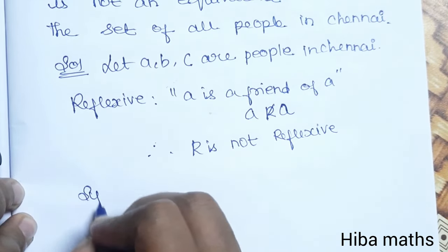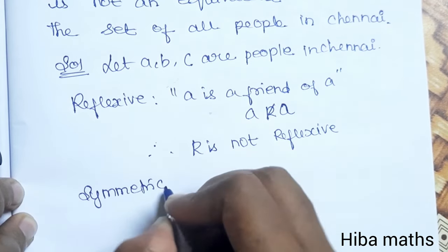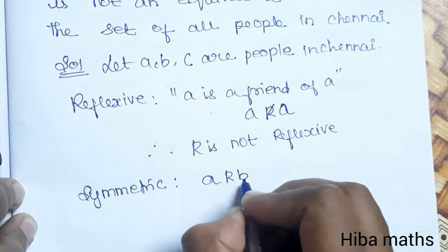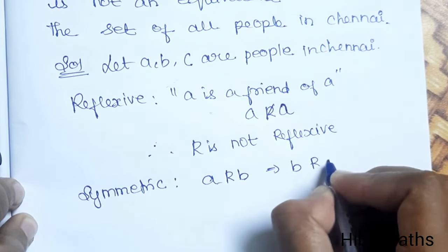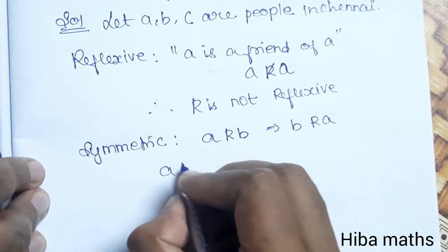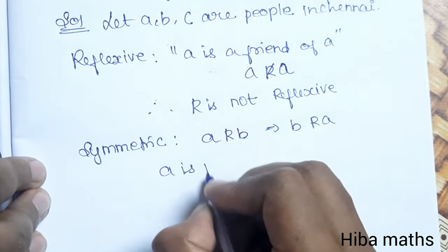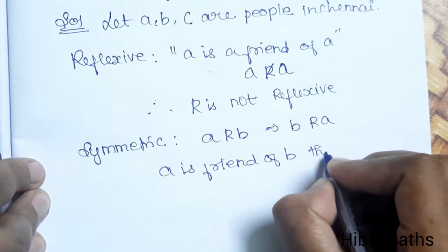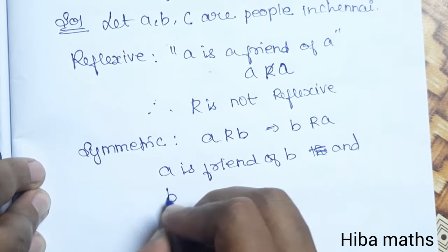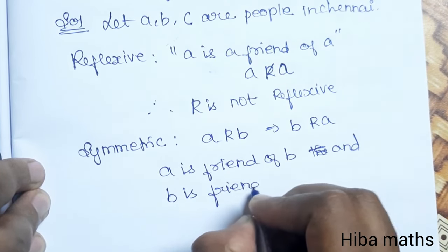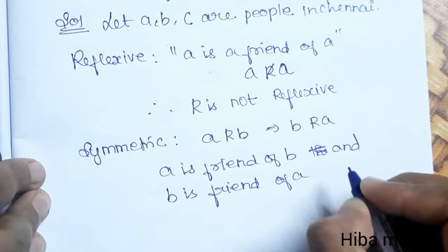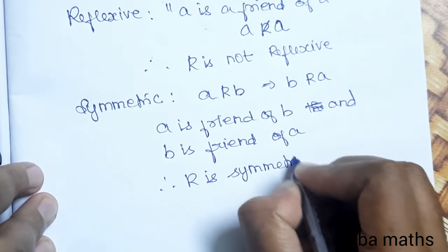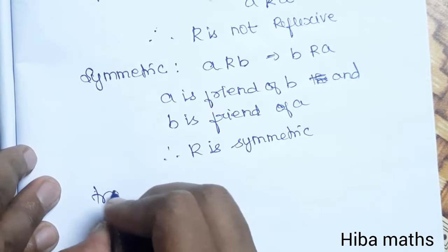But let's check symmetric. For symmetric, if a is a friend of b, then b is a friend of a. This is correct. Therefore, R is symmetric.